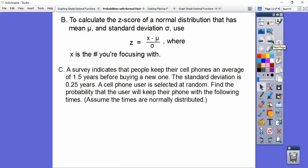So I just slid that up right there. Here's one. A survey indicates that people keep their cell phones on average of 1.5 years before buying a new one. Okay, I am way past that. The standard deviation is 0.25 years. A cell phone user is selected at random. Find the probability that the user will keep their phone with the following times. And assume that these are always normally distributed. Otherwise, we can't do that. All right, less than a year.